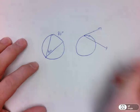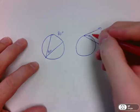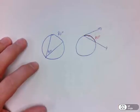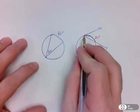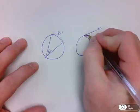So if this arc here is, say, 80 degrees, well, the angle where the vertex is on the circle, again, is half, 40 degrees.